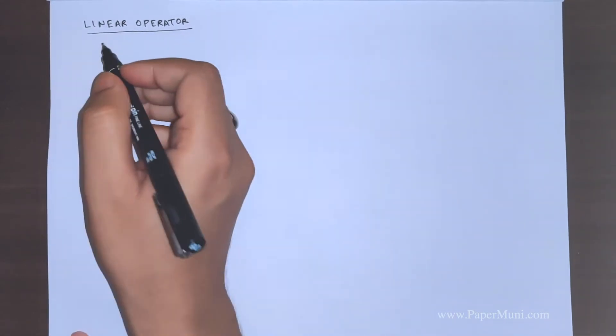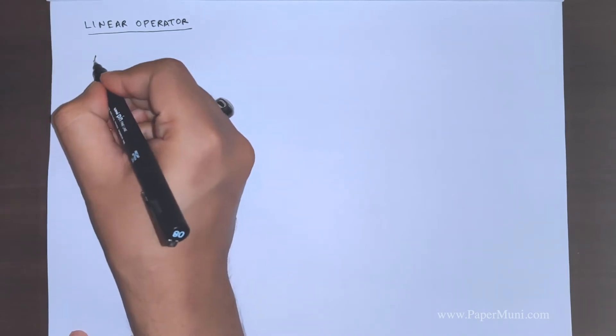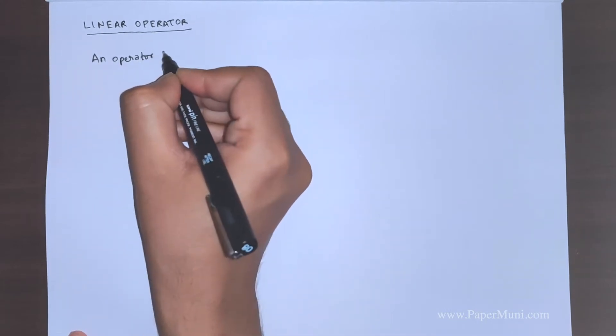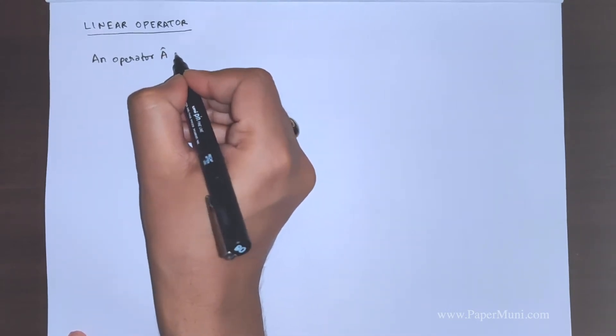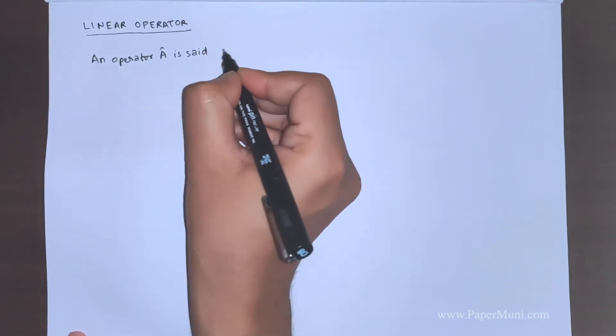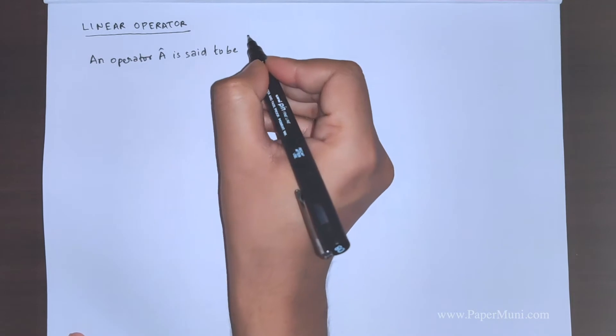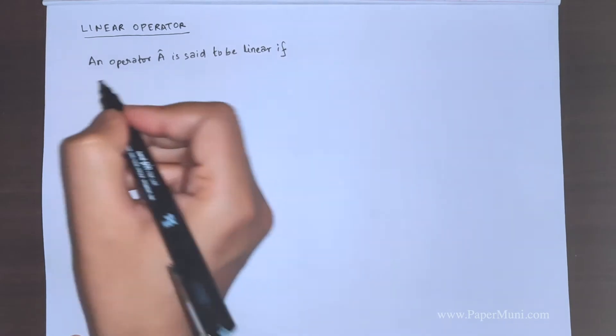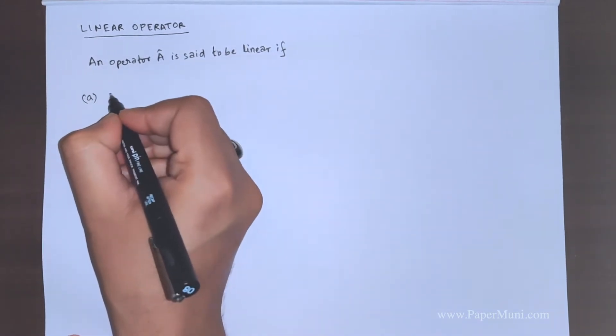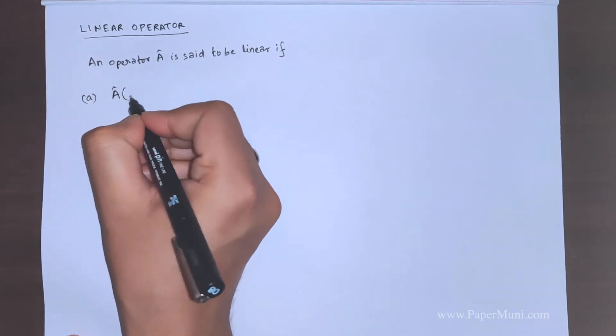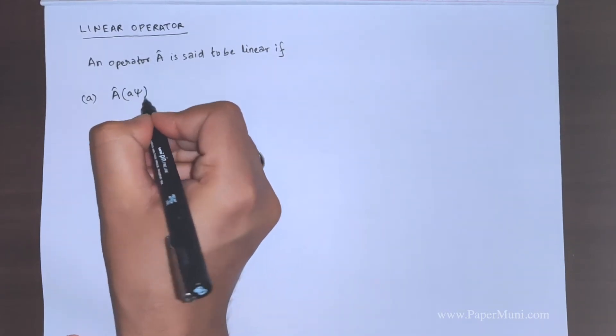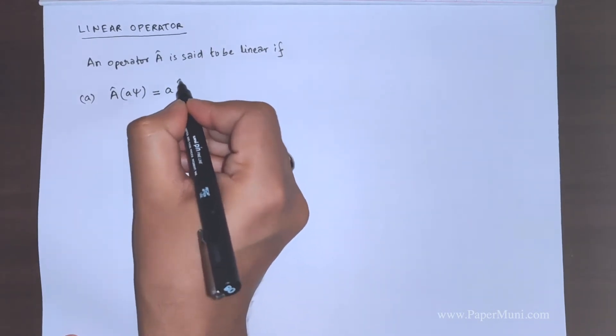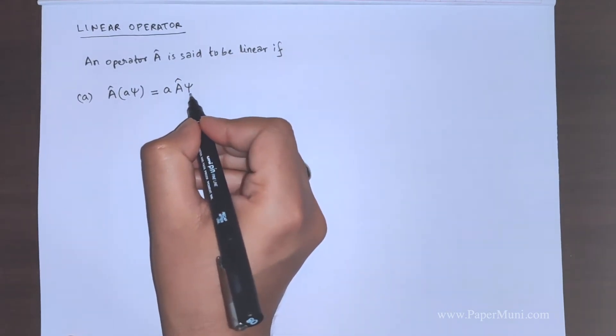So, what is a linear operator, how it is defined. An operator A is said to be linear if the operator follows the following conditions. Now, if we have A operates on a scalar quantity multiplied by operating on psi, this scalar quantity comes out as it is and is equivalent to this format.